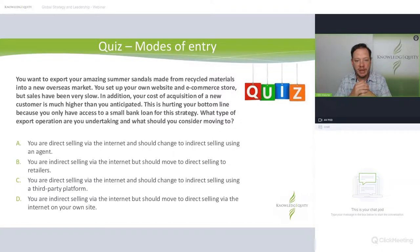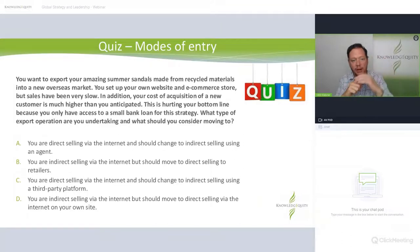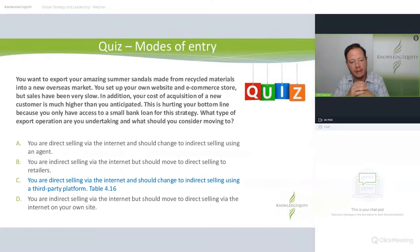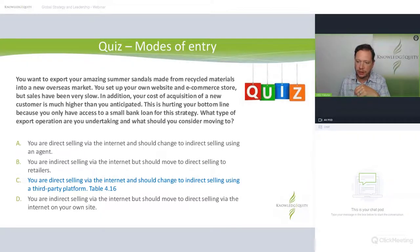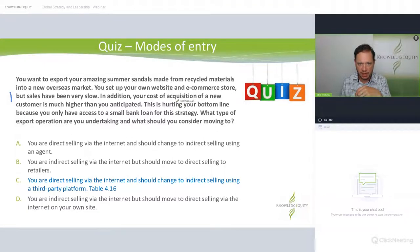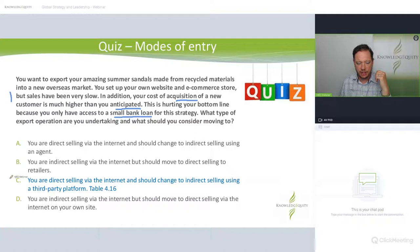Quiz: you want to export your summer sandals — read the mini case and have a go. The answer is: you are direct selling via the internet and should change to indirect selling using a third-party platform. Refer to Table 4.16. You're setting up your own e-commerce store but sales are slow, your cost of acquisition is much higher than anticipated, and this is hurting your bottom line. The solution: instead of spending heavily on ads to drive traffic, consider just selling through Amazon.